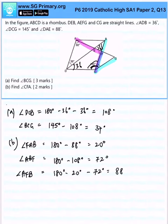This allows me to find angle CFA now because angles on the straight line is 180 degrees. So angle CFA will just be 180 degrees minus 88, and that will give us 92 degrees. That is the solution for this question.